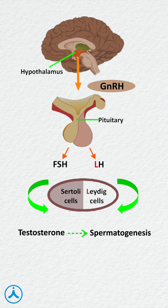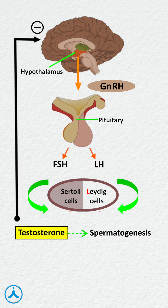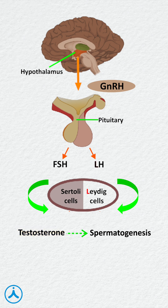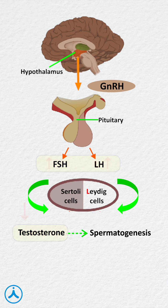When there are adequate testosterone levels in the body, a negative signal is sent to the brain to stop producing LH and FSH. Similarly, if the testosterone levels fall down, then LH and FSH production is increased.